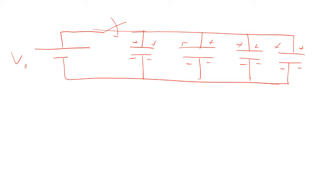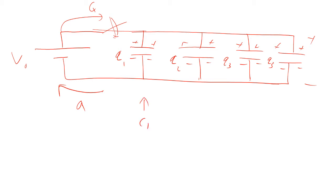When we close the switch, some charge had to flow in order for it to be positive on the top and negative on the bottom. We have some Q1, Q2, Q3, and Q4 — that's capacitor 1, capacitor 2, capacitor 3, and capacitor 4. They do not have to all be identical. What has to be identical is that one end of them is all connected and the other end is all connected together — that makes it parallel.